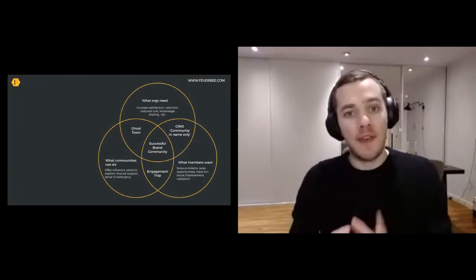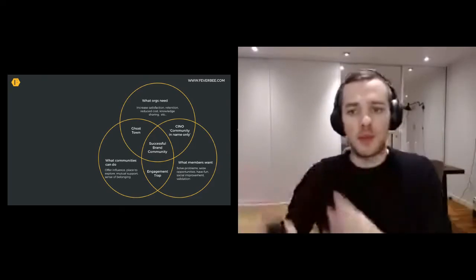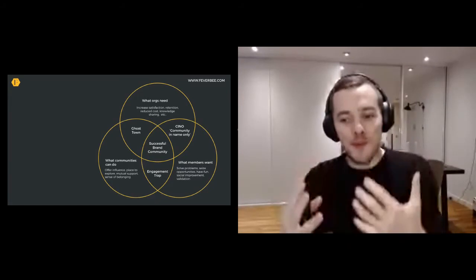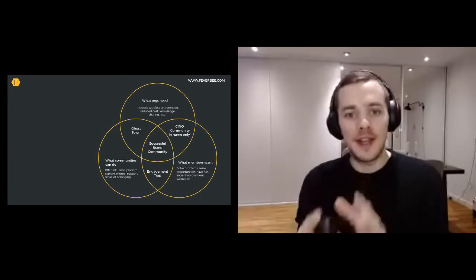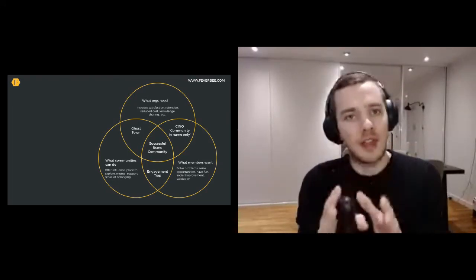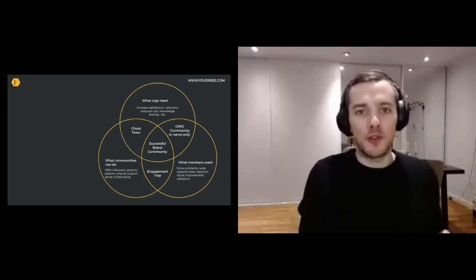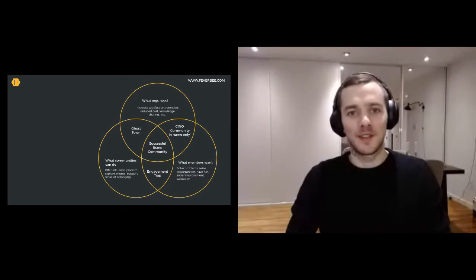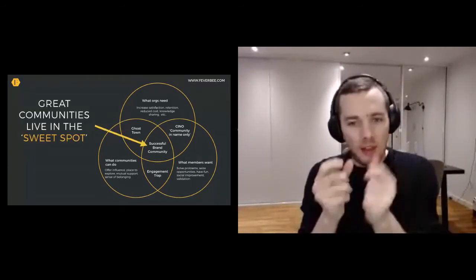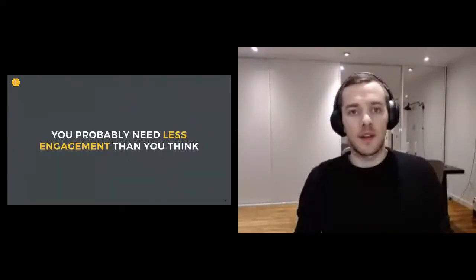A lot of organizations have to find that sweet spot between what an organization needs — satisfaction, retention, knowledge sharing, more developers contributing to different projects — and what members actually want: solving problems, seizing opportunities, getting social validation. And then what a community can actually do: giving people an incredible sense of influence, belonging, or mutual support. There's a danger if you're just pursuing engagement that you end up in the engagement trap, where you're measured by the engagement level you're trying to generate. Engagement cannot increase forever, and a successful brand community exists in that sweet spot in the middle. You probably need far less engagement than you think.